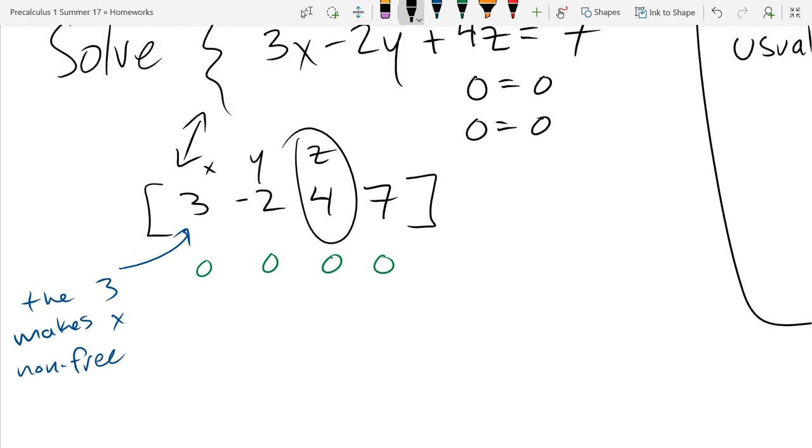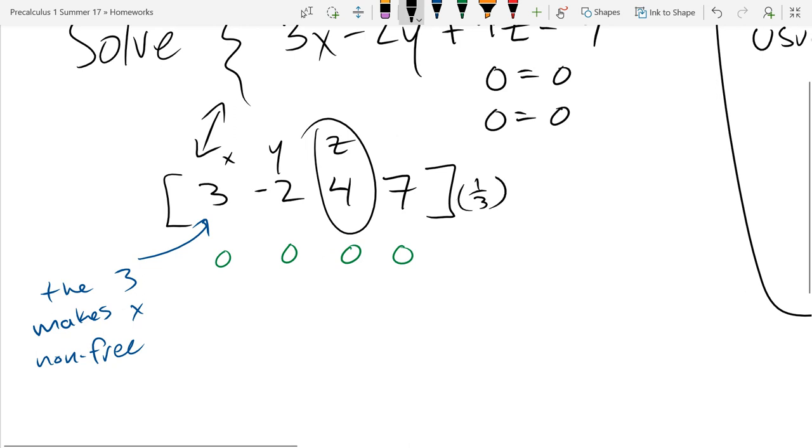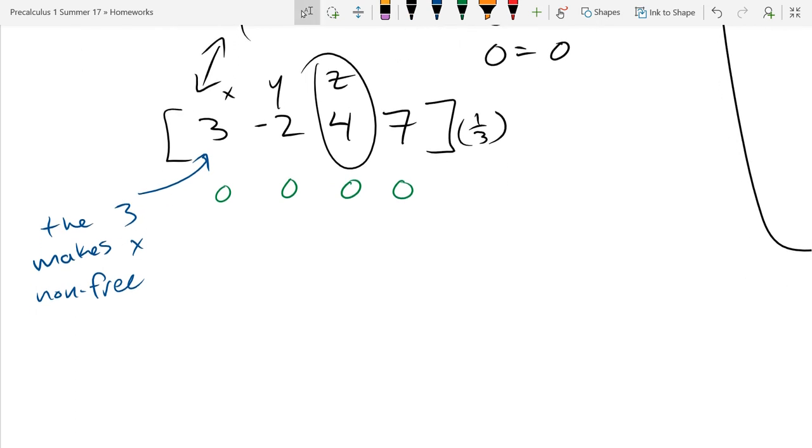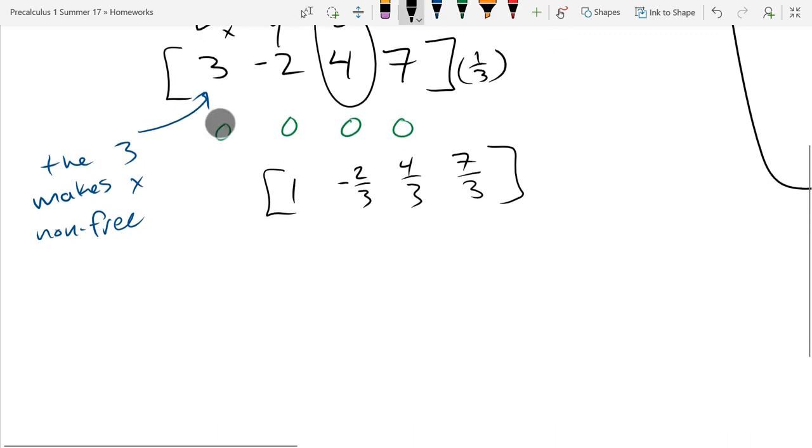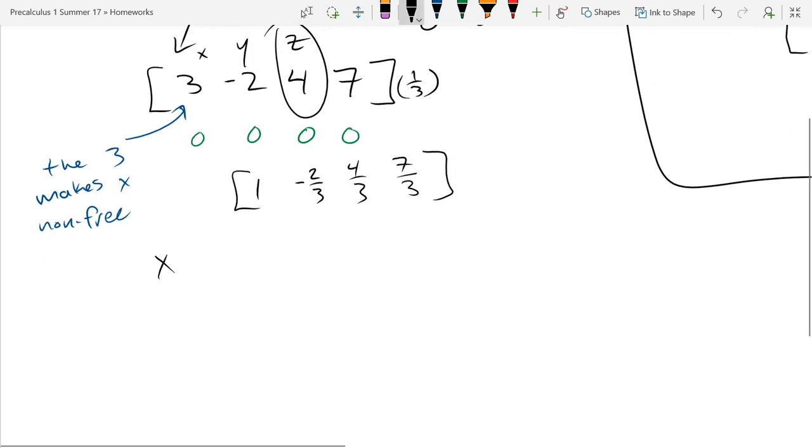If I was doing row reduction, I would multiply this whole thing by a third, and I would get fractions earlier than I really wanted. But I did teach row reduction this way. So you can absolutely get this, which is really just your original equation multiplied by a third. That's a one. Okay, so if we translate this back, this is x minus 2 thirds y plus 4 thirds z equals 7 thirds.